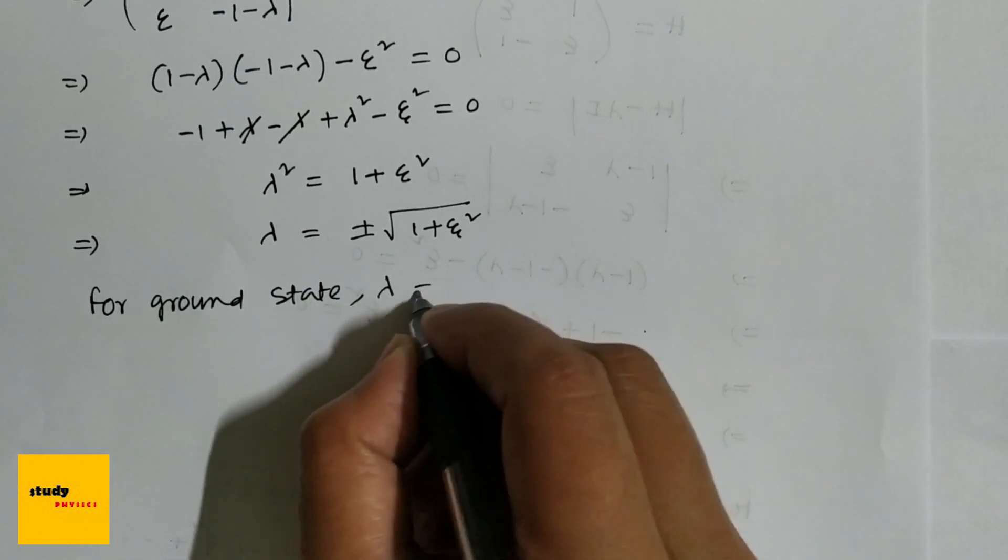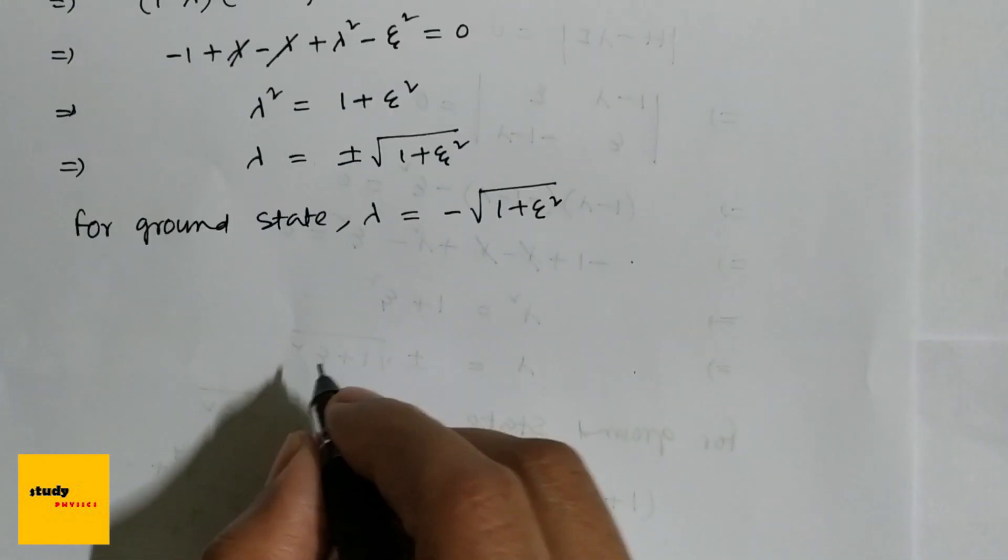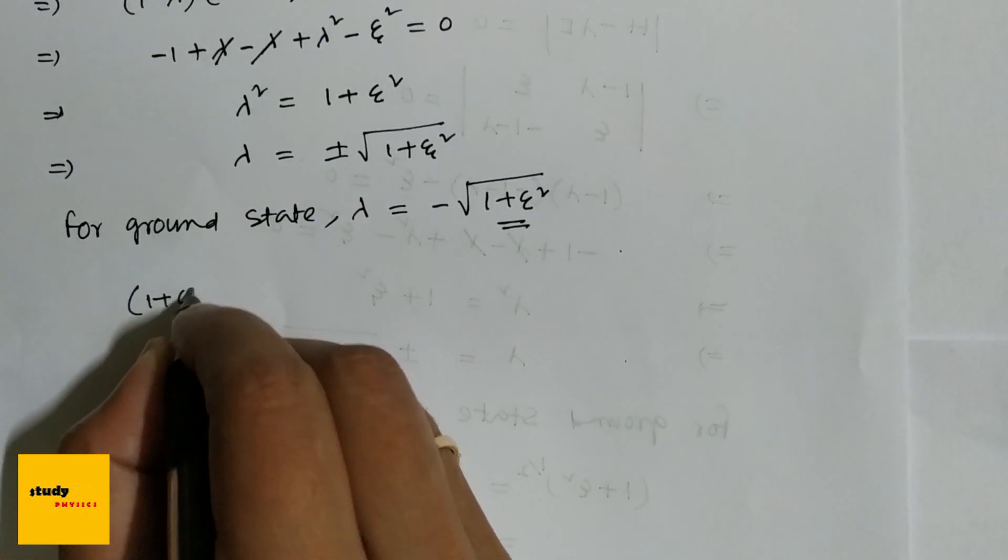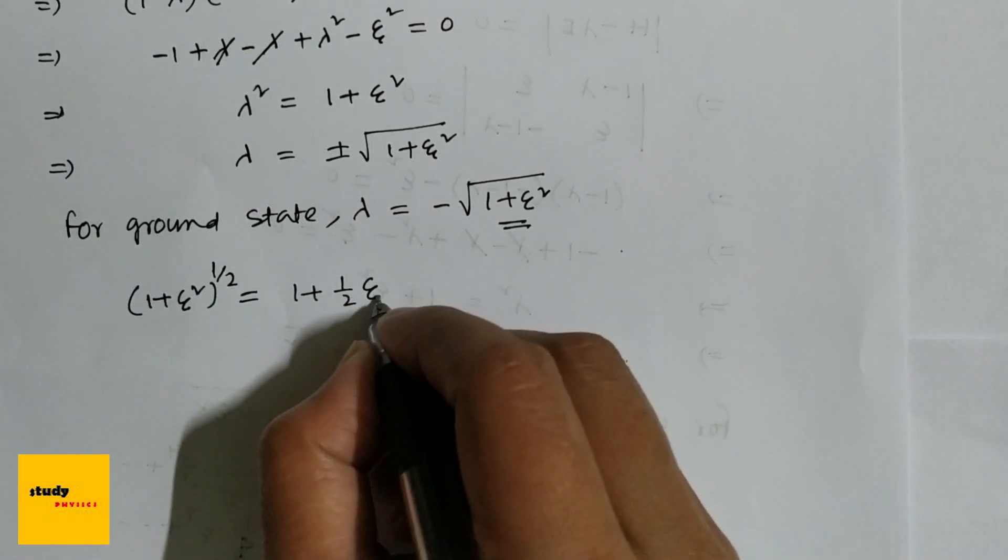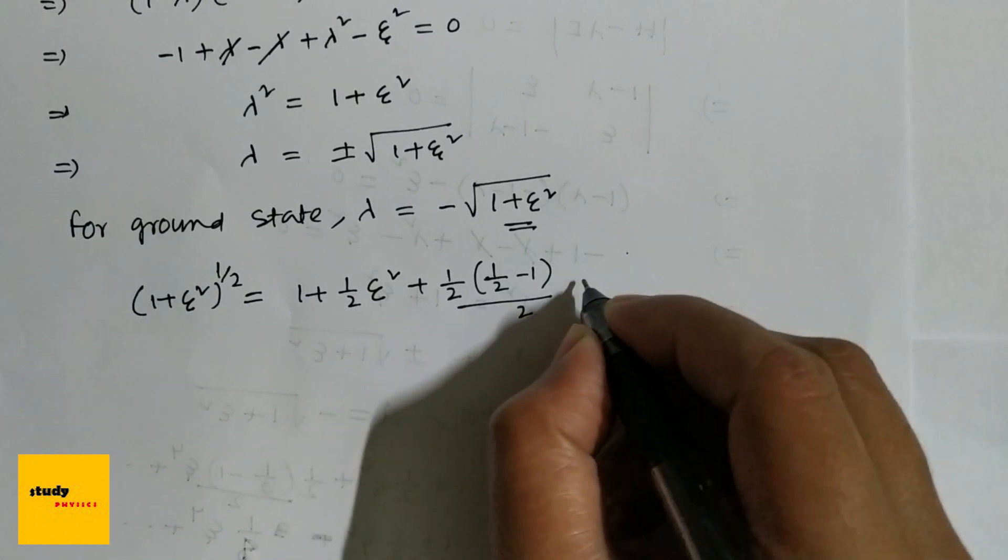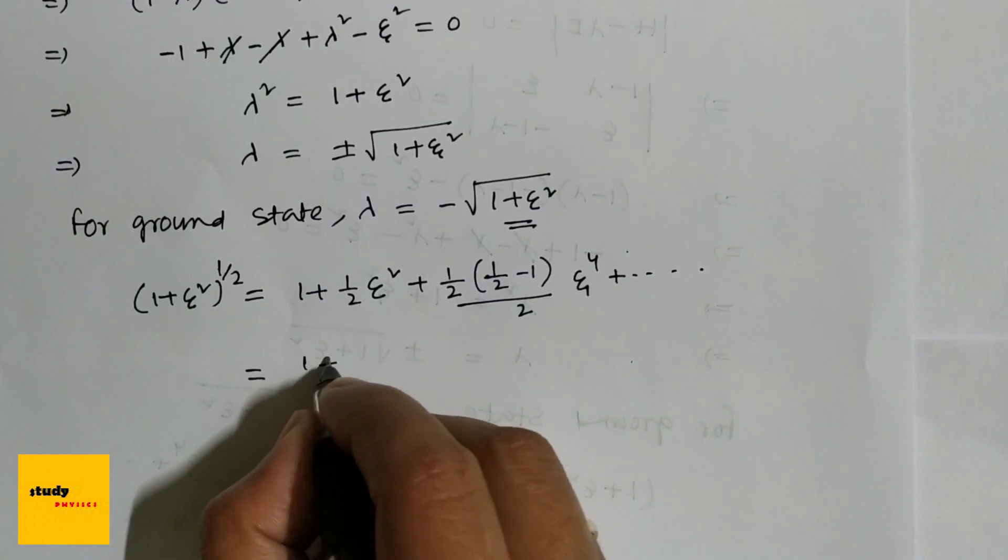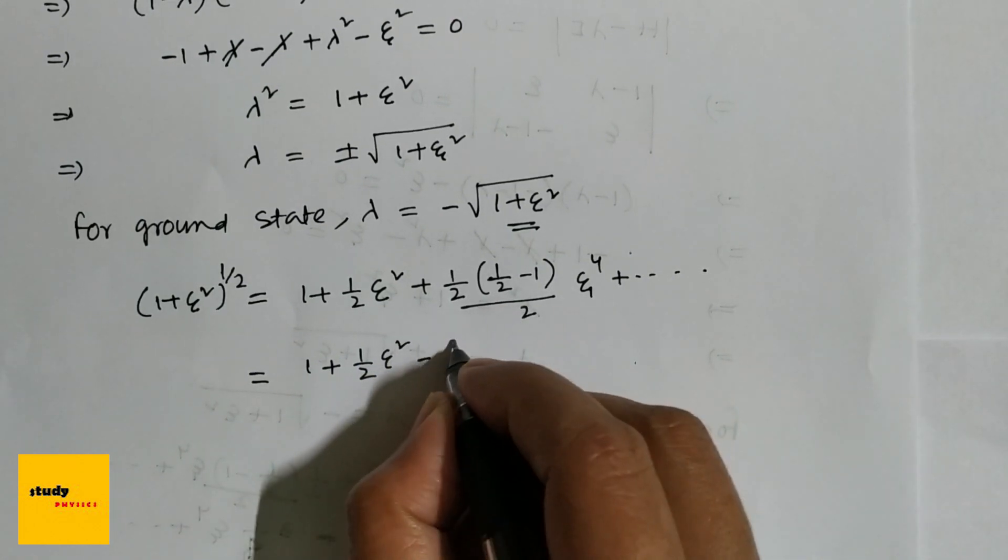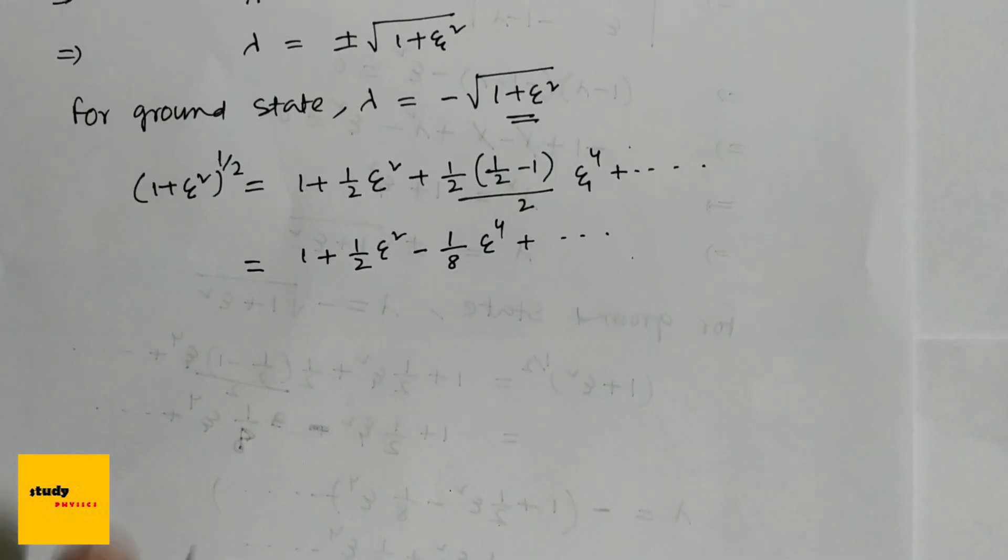Now we will take the binomial expansion. (1+ξ²)^(1/2) = 1 + (1/2)ξ² + (1/2)(1/2-1)/2 · ξ⁴ + ... So the value is 1 + (1/2)ξ² - (1/8)ξ⁴.